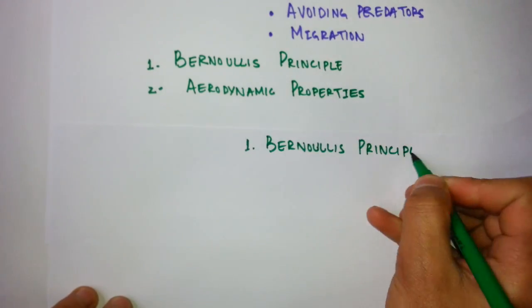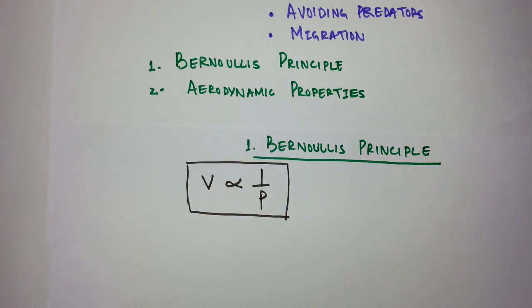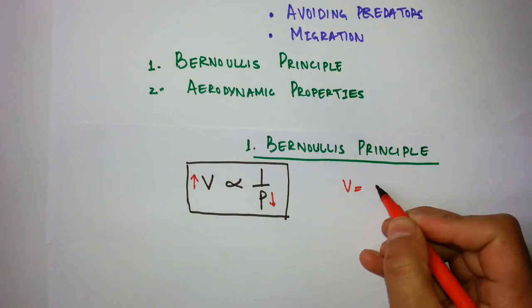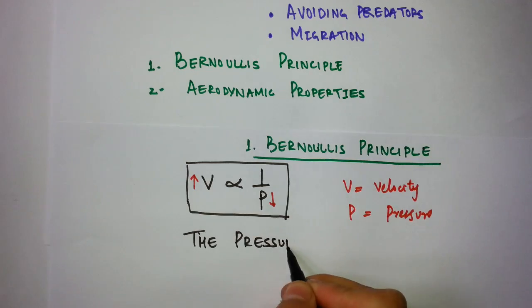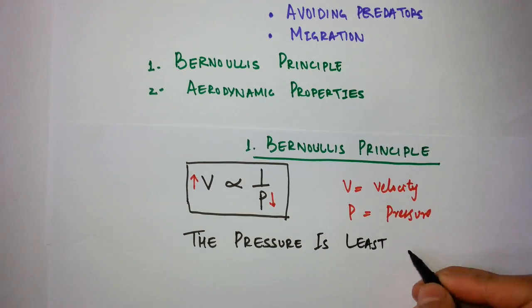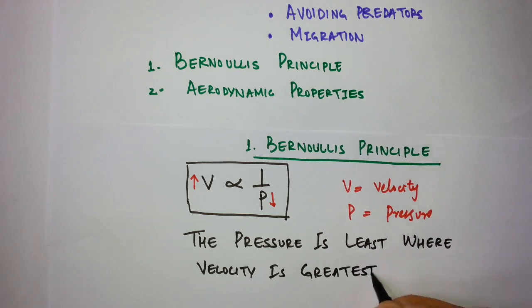Bernoulli's principle can be defined mathematically as V is inversely proportional to P. V is velocity and P is pressure. That means V is directly proportional to 1 by P. Where V is higher, P should be lesser because they are inversely proportional to each other. This is the case with Bernoulli's principle.